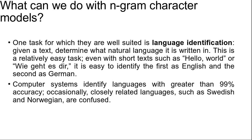One task for which n-gram character models are well suited is language identification — given a text, determine what natural language it is written in. This is a relatively easy task even with short text. For example, it is easy to identify "Hello world" as English and "wie geht es dir" as German. Computer systems identify languages with greater than 99% accuracy, though occasionally closely related languages such as Swedish and Norwegian are confused.